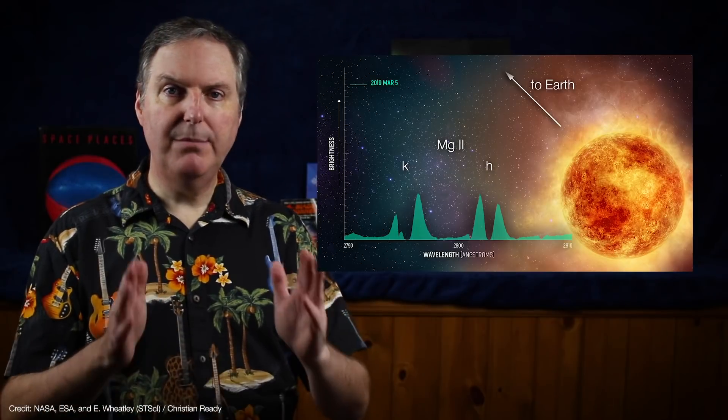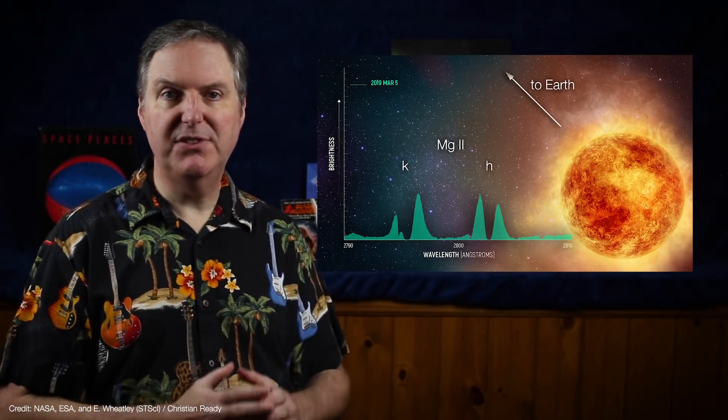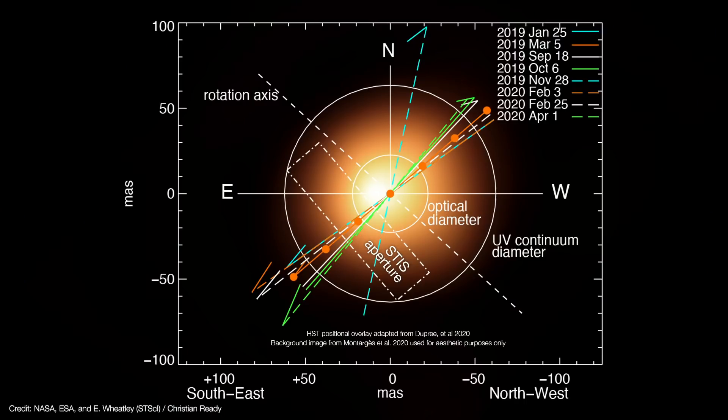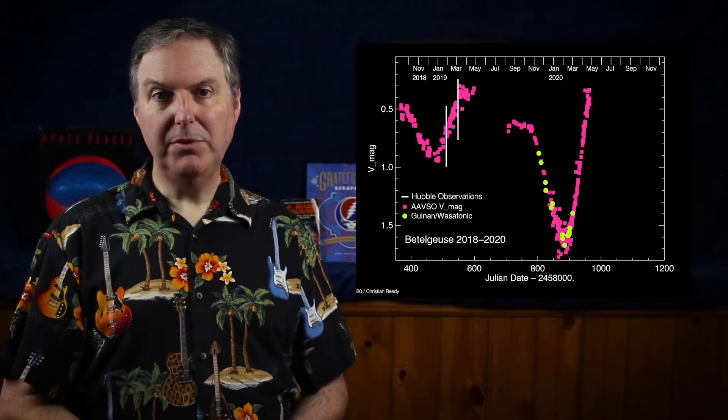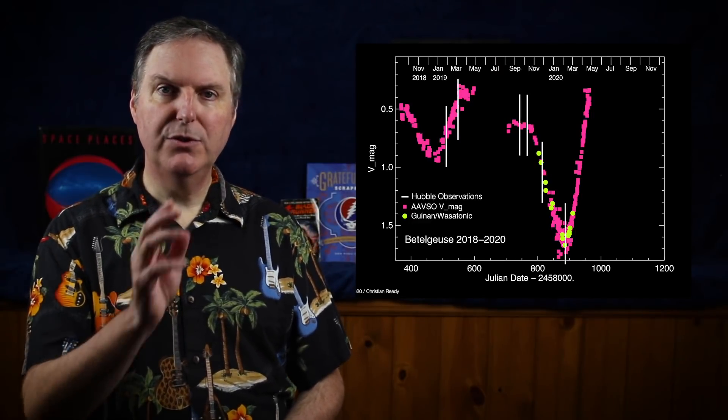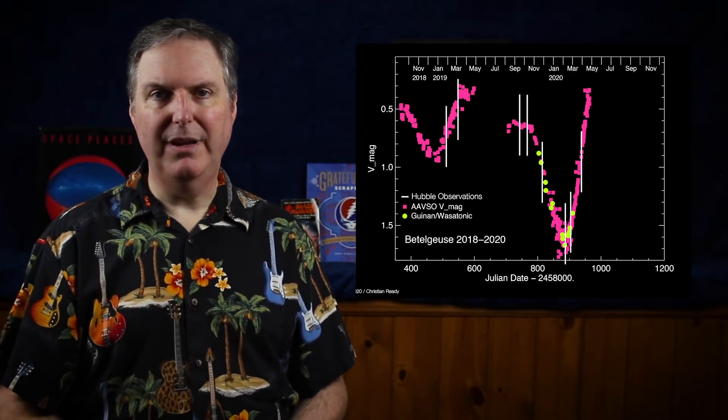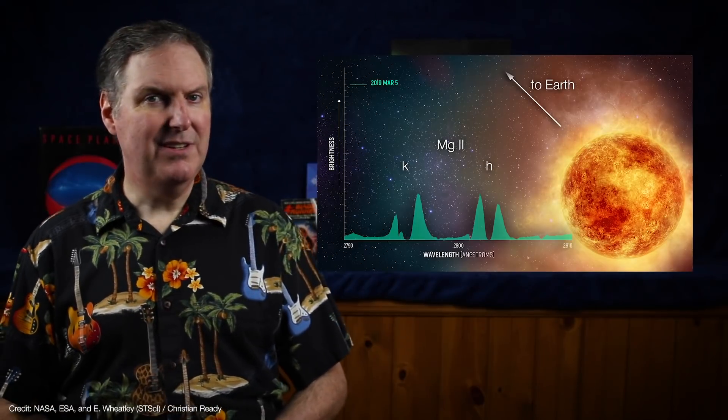That allows the team to use the emission lines to take Betelgeuse's temperature. Each time Hubble revisited Betelgeuse, it took spectra at several different points across the star's atmosphere, effectively measuring the temperature along the way. As luck would have it, Hubble visited Betelgeuse before, during, and after the Great Dimming, and those magnesium lines didn't disappoint.